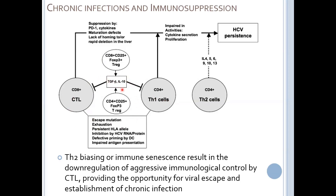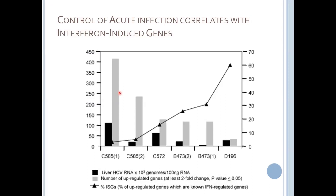This is another example of why immunologists often just measure cytokines — we can see the activity of these Tregs by measuring a soluble marker in the blood without having to get cells out of somebody's liver. Looking at people that controlled acute infection, there was a nice inverse correlation: if you had more of an interferon response — measured by the percent of interferon-stimulated genes upregulated — you had less HCV overall.